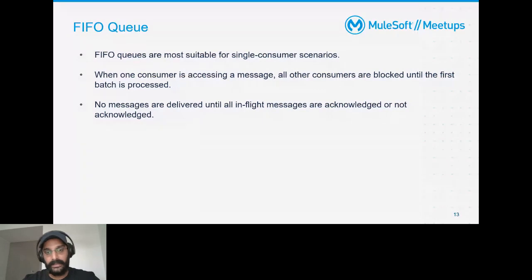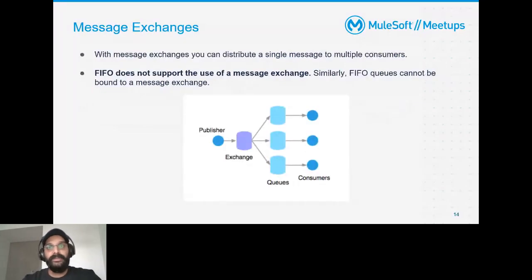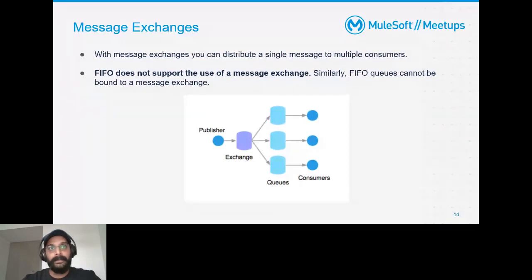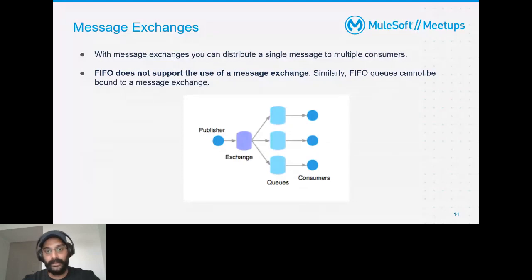Message exchange — you can think of it like a scatter-gather in MuleSoft terms. A publisher puts a message into the exchange, and the exchange publishes those messages to all queues that are bound to it. You can only have standard queues bound to an exchange — FIFO queues cannot be bound to an exchange, since there is no strict ordering requirement.